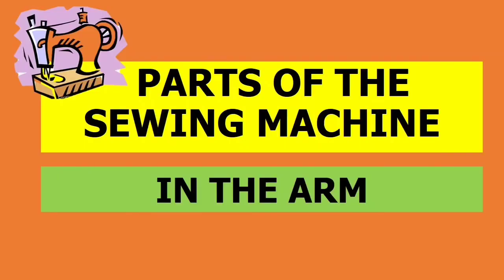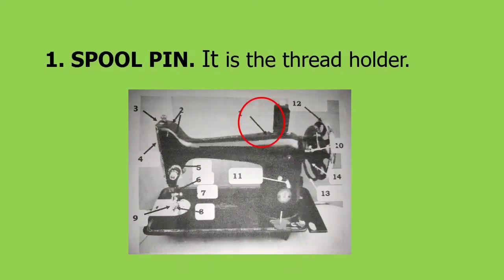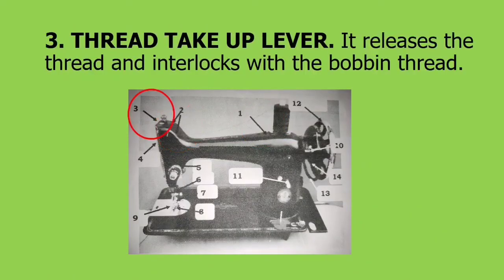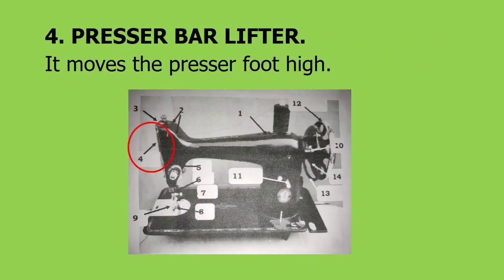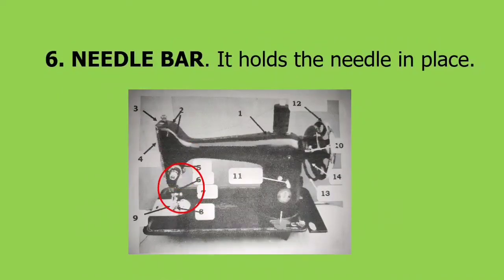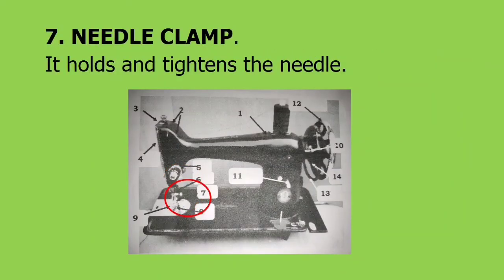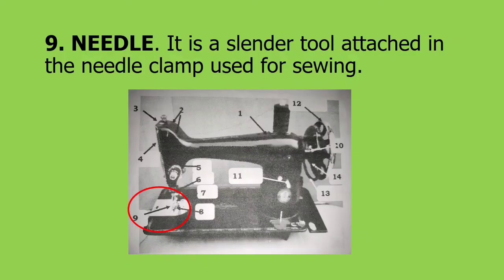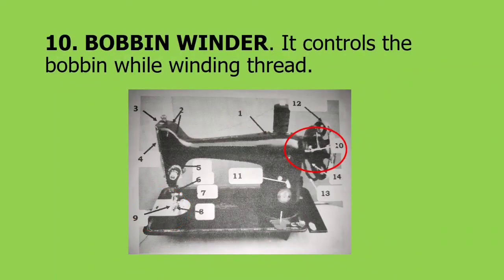Now let's talk about the parts of the sewing machine in the arm. First, spool pin: it is the thread holder. Two, thread guide: it keeps the thread in position. Three, thread take-up lever: it releases the thread and interlocks with the bobbin thread. Four, presser bar lifter: it moves the presser foot high. Five, tension: it controls the looseness and tightness of stitches. Six, needle bar: it holds the needle in place. Seven, needle clamp: it holds and tightens the needle. Eight, presser foot: it holds the fabric in place while sewing. Nine, needle: it is a slender tool attached in the needle clamp used for sewing. Ten, bobbin winder: it controls the bobbin while winding thread.